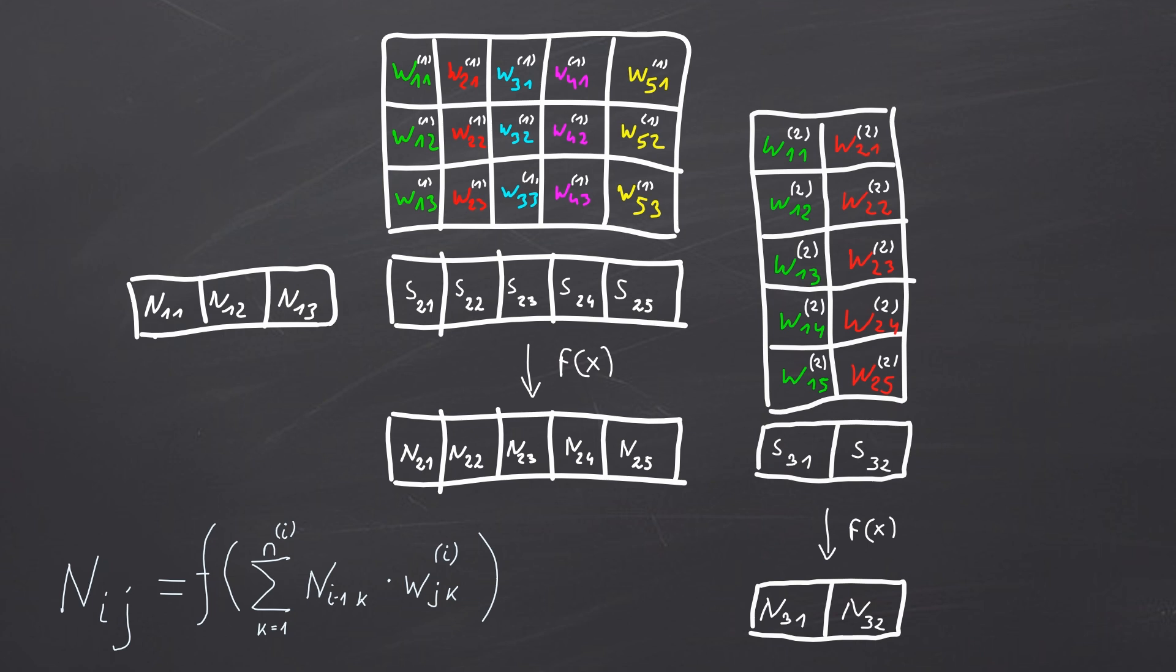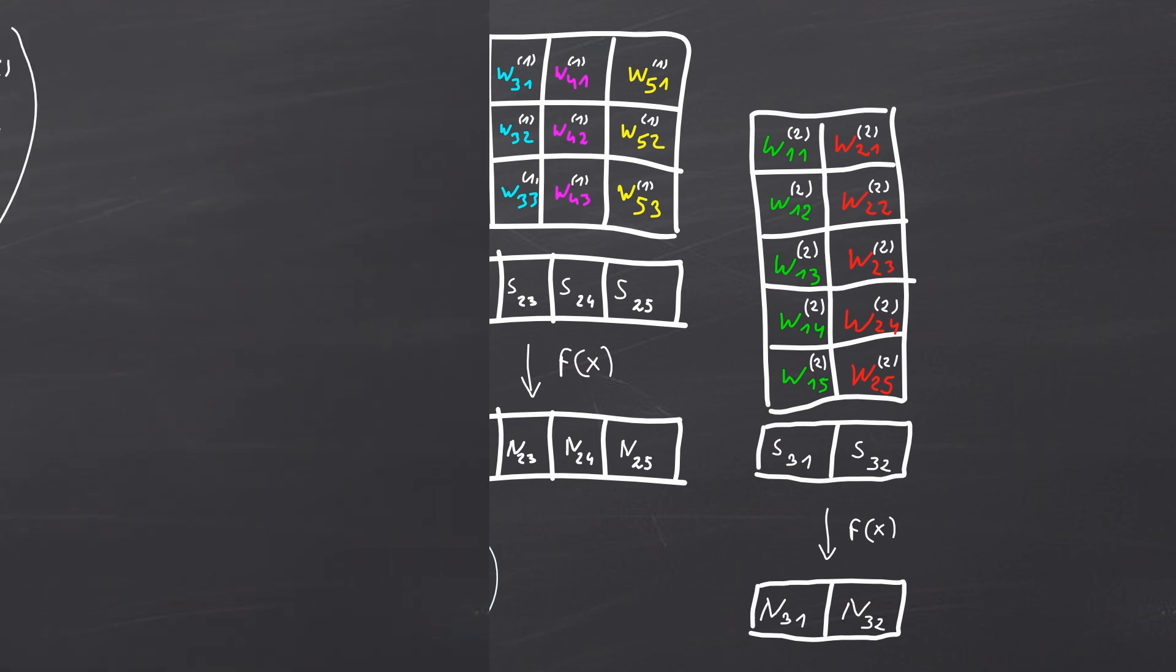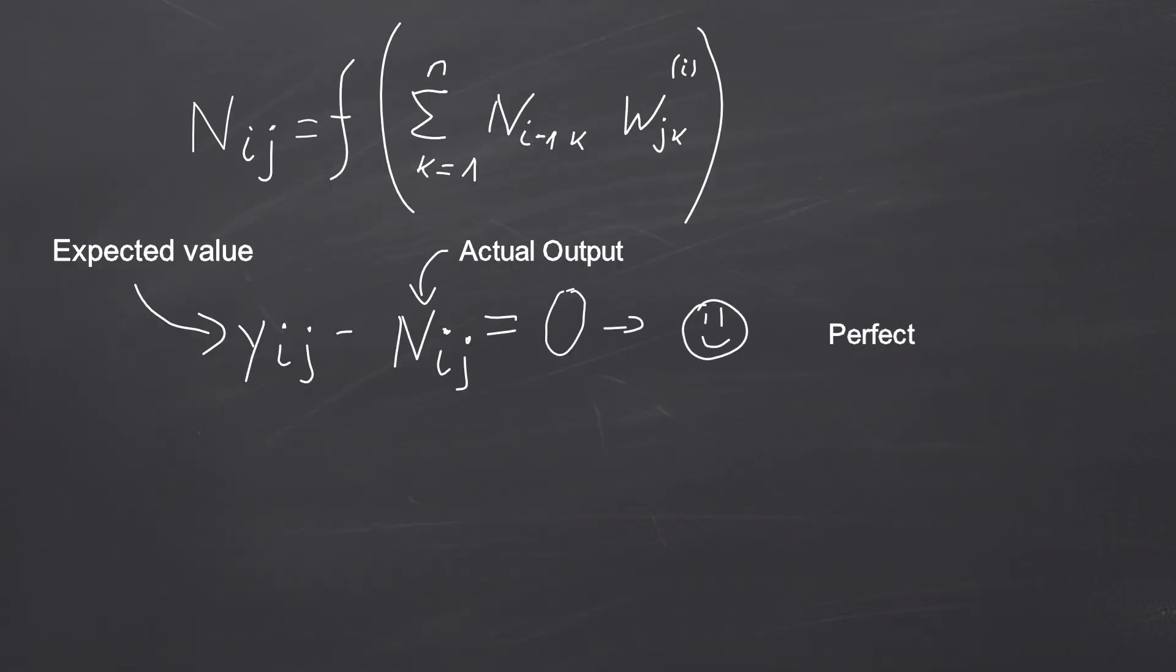Now that we understand how to transfer input into output using matrix operations, we need to address a crucial step: training the network. Without training, our network will produce random output values, so we need a way to adjust this output to be meaningful. The key to adjusting the output lies in modifying the weights for each layer. But how exactly do we do that? We need to figure out how the activation function changes depending on the received value. This is important because this will tell us how to update the weights.